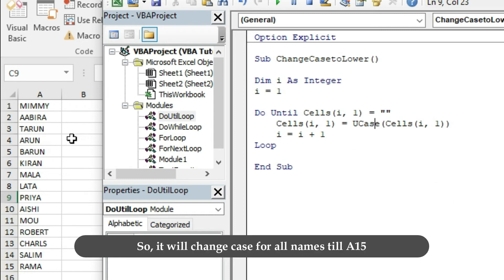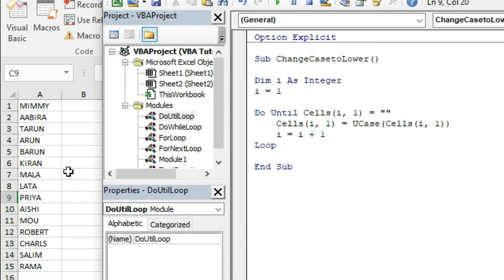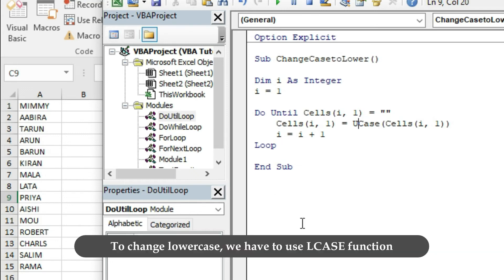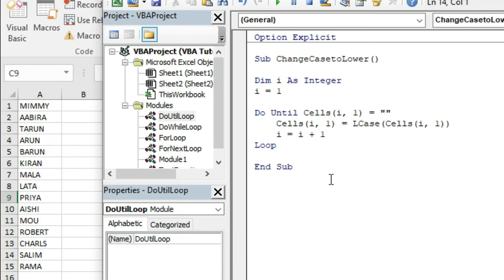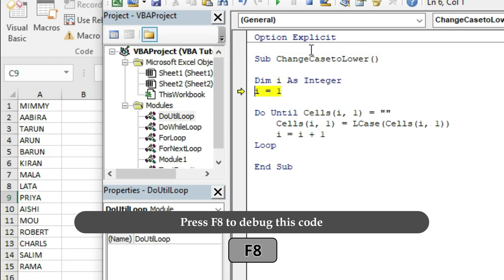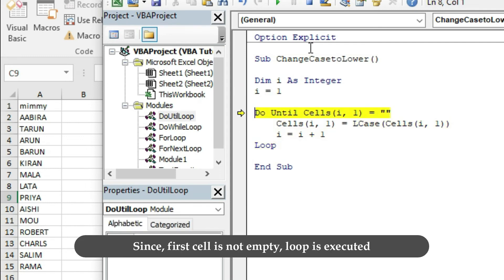So it will change case for all names to A15. To change to lowercase, we have to use LCASE function. Press F8 to debug this code. Since first cell is not empty, loop is executed.